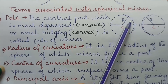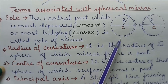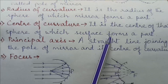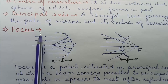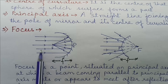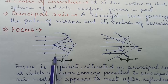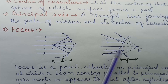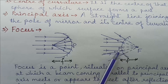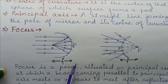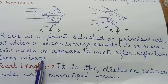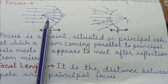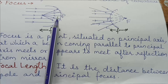Center of curvature — it is the center of the sphere of which the surface forms a part. Principal axis — it is the line joining the pole and the center of curvature. Focus — consider a beam of parallel rays coming parallel to the principal axis and incident on a spherical mirror. In case of concave mirror the beam actually meets at F, while in case of convex mirror it only appears to diverge from F when rays are produced back. Focus is a point situated on the principal axis at which a beam coming parallel to the principal axis meets or appears to meet after reflection from the mirror. Focal length — the distance of focus from the pole of the mirror is called focal length.